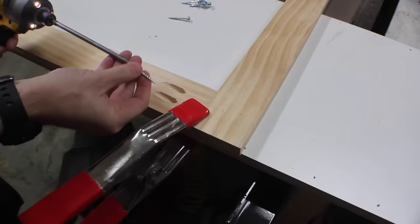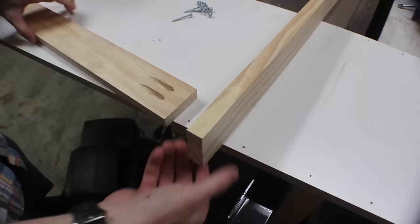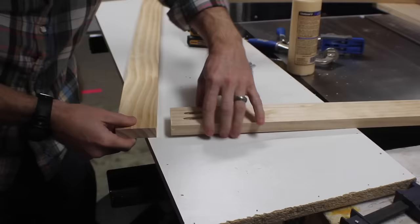I used pocket holes to connect all these pieces. Pocket holes are great because they're hidden and in this case it allows me to build the frame flat without having the structure of the cabinet behind it yet.